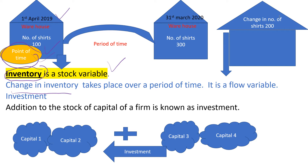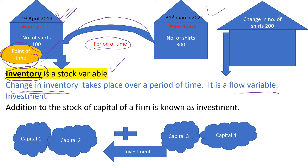Then, change in inventory. What do we mean by change in inventory, and why do we call it a flow variable? Because change in inventory is usually measured over a period of time. As it is measured over a period of time, it involves opening stock — the beginning of the year — and closing stock — the end of the year. So we measure the change in stock from 1st April to 31st March, which we call a financial year.